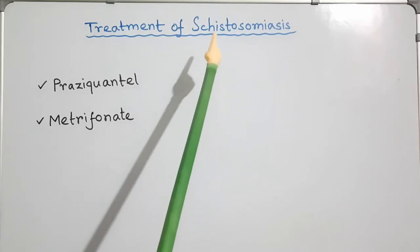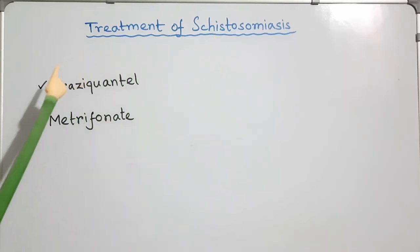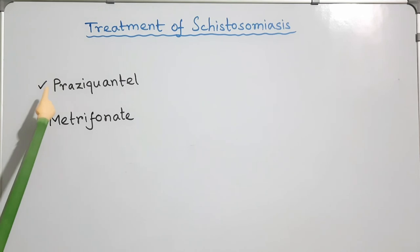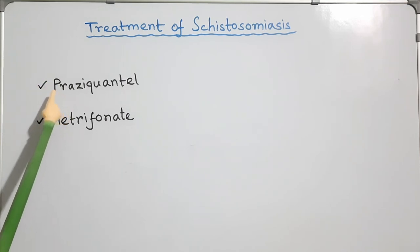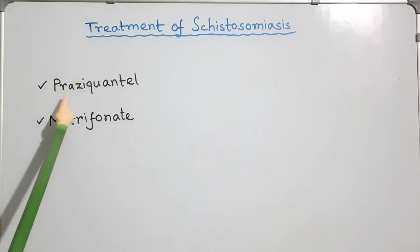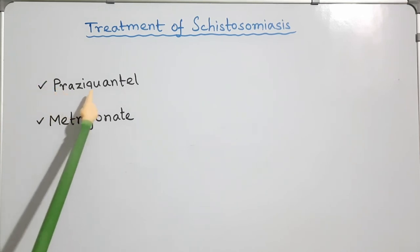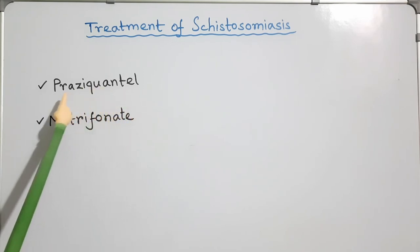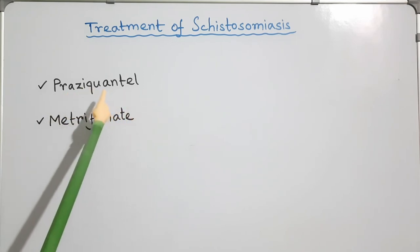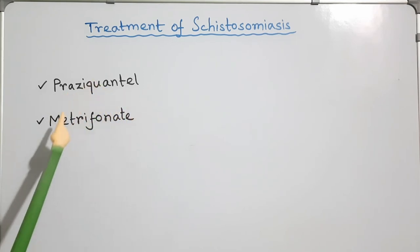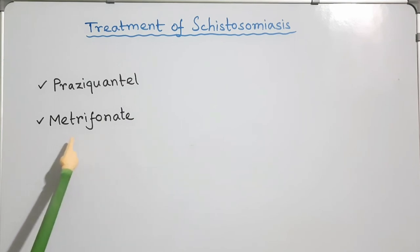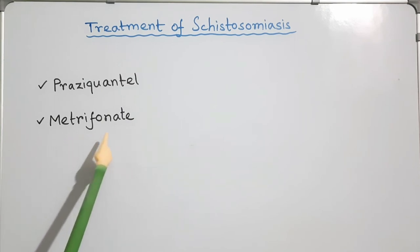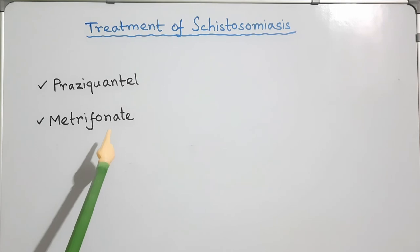Treatment of Cystosomiasis: Cystosomiasis can usually be treated successfully with a short course of a medication called praziquantel, which kills the worms. Metrifonate is the alternative drug of choice in cystosomiasis due to Schistosoma haematobium.